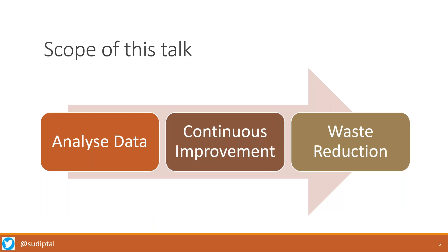We're going to look at what things you can analyze, how this can lead you to your continuous improvement step, and how if you implement the continuous improvement step you can go towards waste reduction. One of the assumptions — the premise of this talk — is that you have been implementing lean agile in some way. You're not a newcomer to the transformation process; otherwise it might be difficult to appreciate the nuances I'm going to talk about.